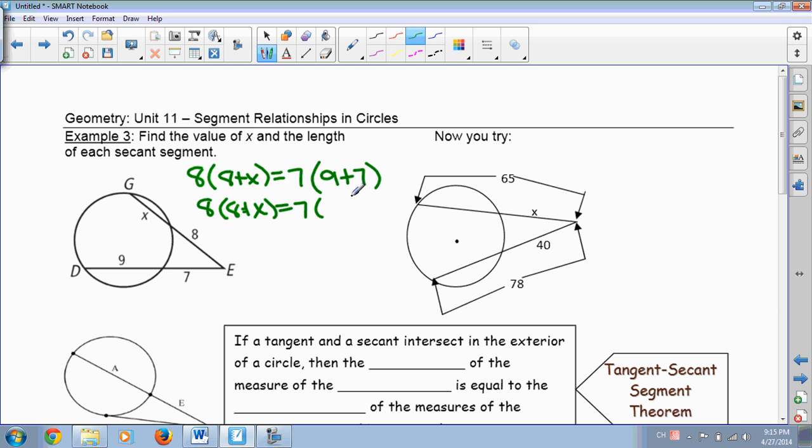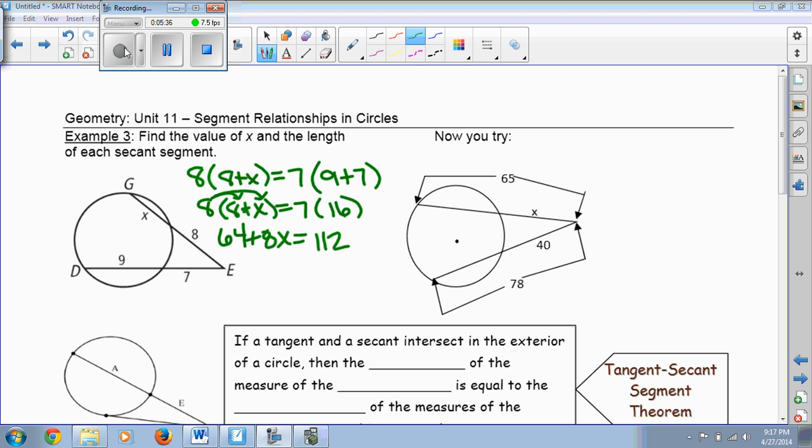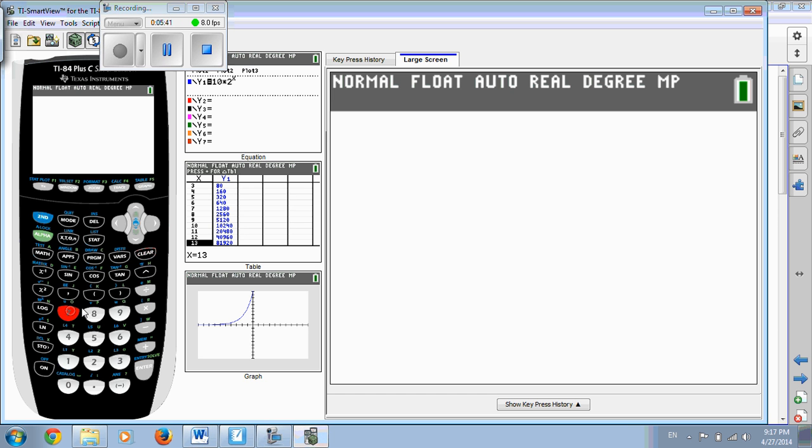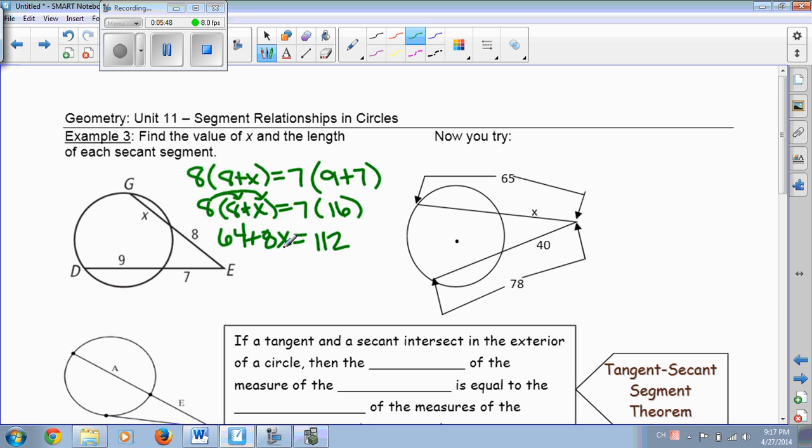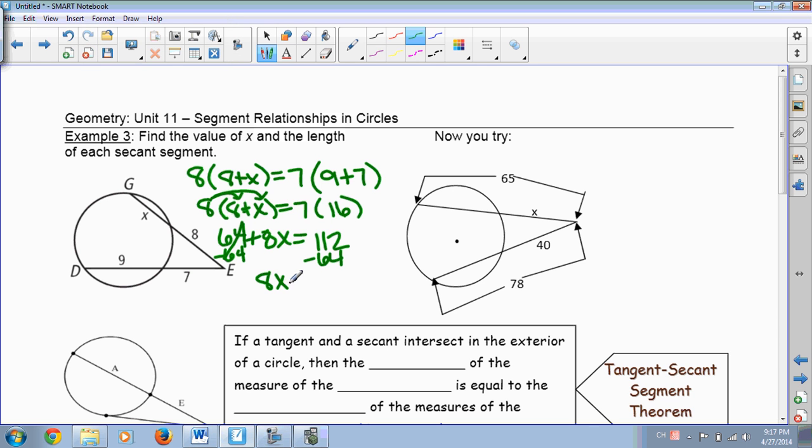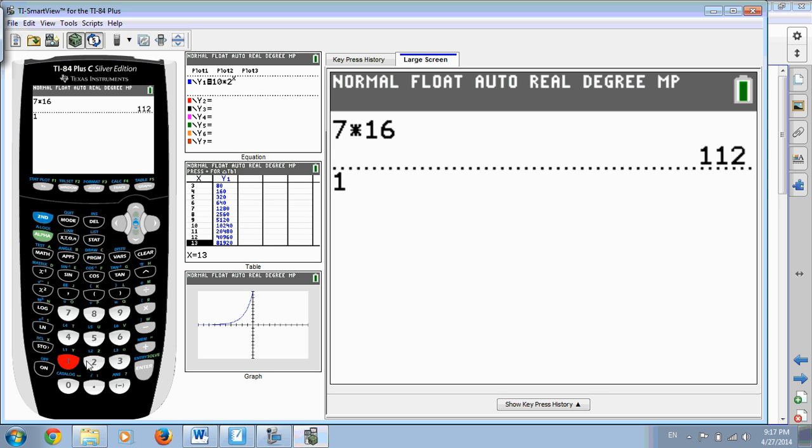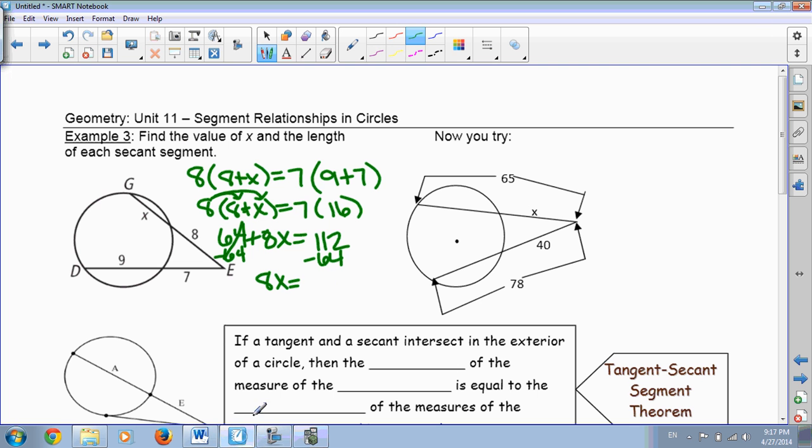Okay, so let's go ahead and add those together. 9 plus 7 is 16. Okay, well over here we can't add the 8 and the X together, so what we're going to do is distribute. So 8 times 8 is 64, and 8 times X is 8X, and 7 times 16 I believe is 112. So then we're going to go ahead and get the 8X by itself. I'm going to subtract 64 from both sides. So 8X is equal to 112 minus 64 is 48. 48, and then divide by 8. 48 divided by 8 is 6.